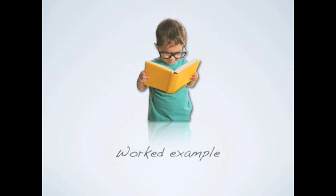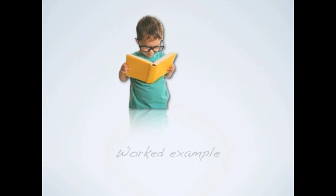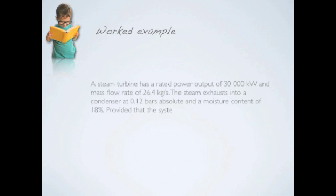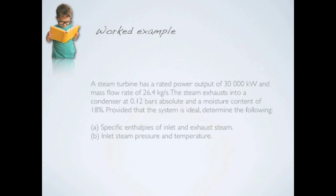So now that you know how to read the Mollier diagram, let's enhance our understanding by doing a worked example. A steam turbine has a rated power output of 30,000 kilowatts and a mass flow rate of 26.4 kg per second.